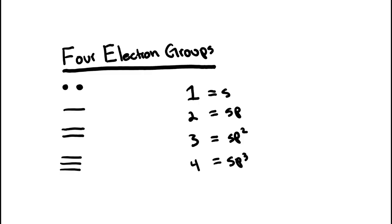How to find hybridization. There are four different electron groups. You can either have a lone pair, a single bond, a double bond, or a triple bond. One group corresponds to s, two corresponds to sp, three corresponds to sp2, and four corresponds to sp3.